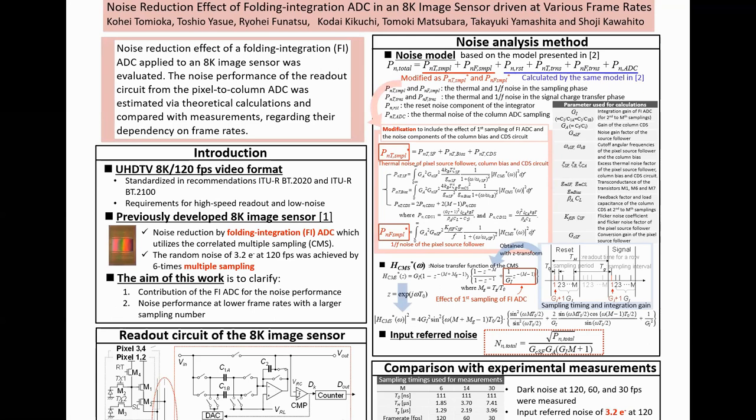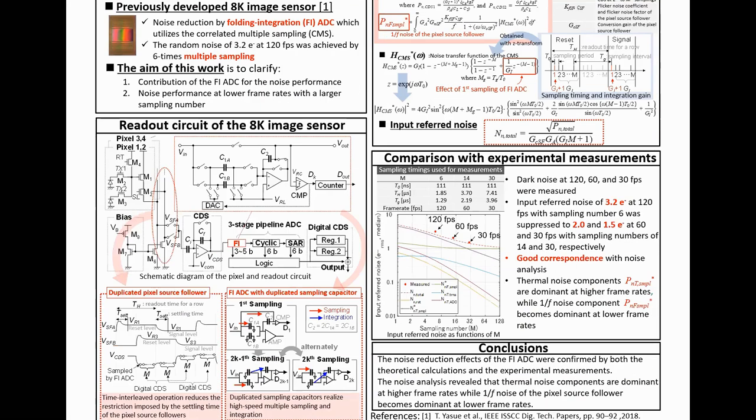We analyzed the noise performance of the readout circuit by theoretical calculations and compared it with experimental measurements. This is a schematic diagram of the pixel and readout circuit. We implemented two architectures to realize both high-speed readout and low noise performance: one is a duplicated pixel source follower and the other is a FIADC with duplicated sampling capacitors. These architectures maximize the sampling number of the FIADC with a limited readout time.